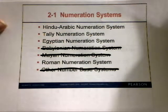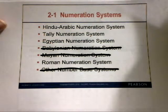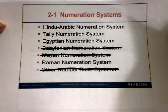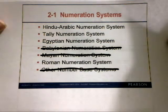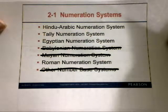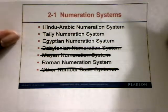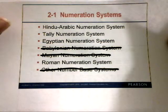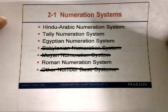In this video, we're going to be looking at numeration systems. In section 2-1, we'll look at four different numeration systems: the Hindu-Arabic numeration system, the Tally numeration system, the Egyptian numeration system, and the Roman numeration system.